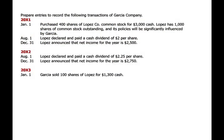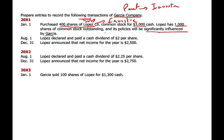Let's look at another example to consolidate what we learned. Garcia company purchased 400 shares of Lopez common stock for $3,000. Garcia is the investor (also called the parent company); Lopez is the investee (also called the subsidiary). Lopez has 1,000 shares of common stock outstanding, and its policies will be slightly influenced by Garcia. Since Garcia bought 400 out of 1,000 shares, they own 40% — requiring the equity method. Lopez declared dividends at $2 per share, announced net income of $2,500 in year one, and in year two declared and paid dividends and declared net income. Then Garcia sold 100 shares for $1,300.